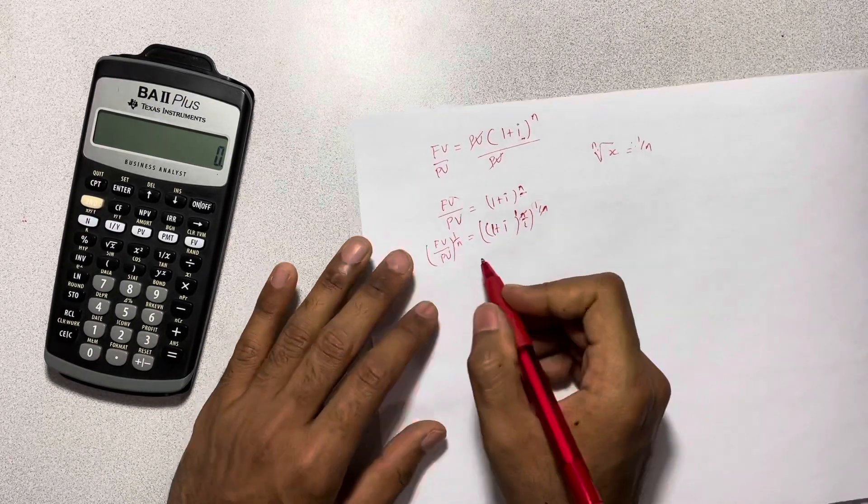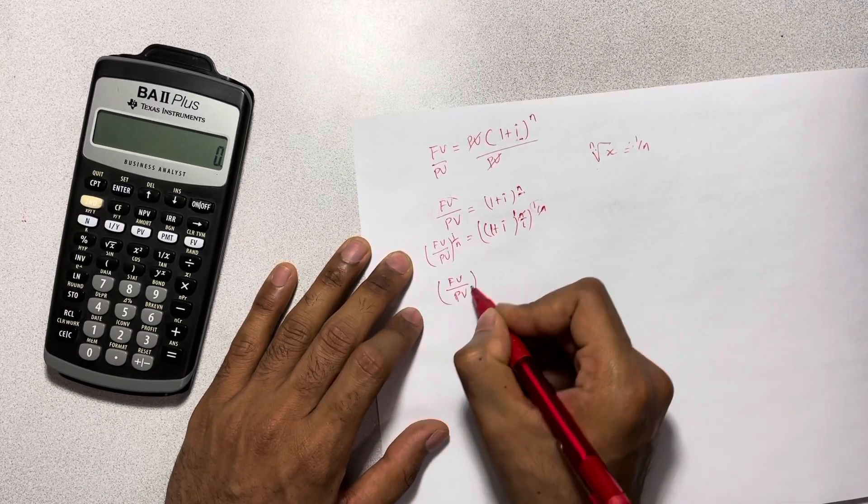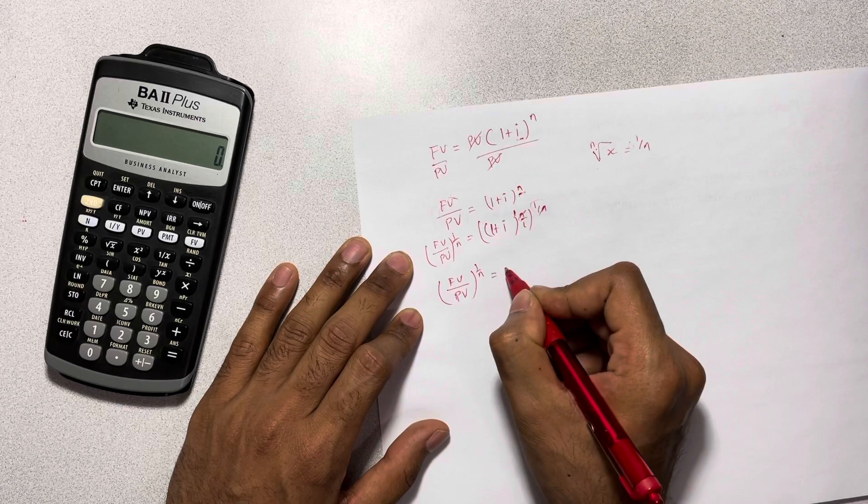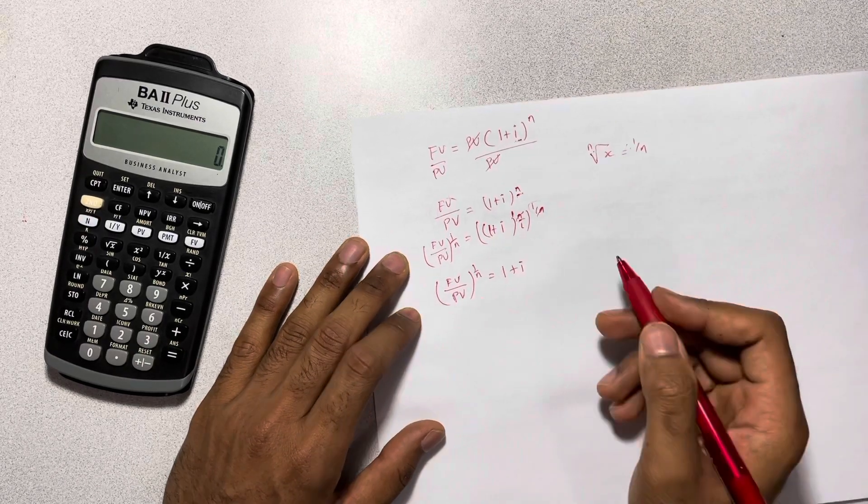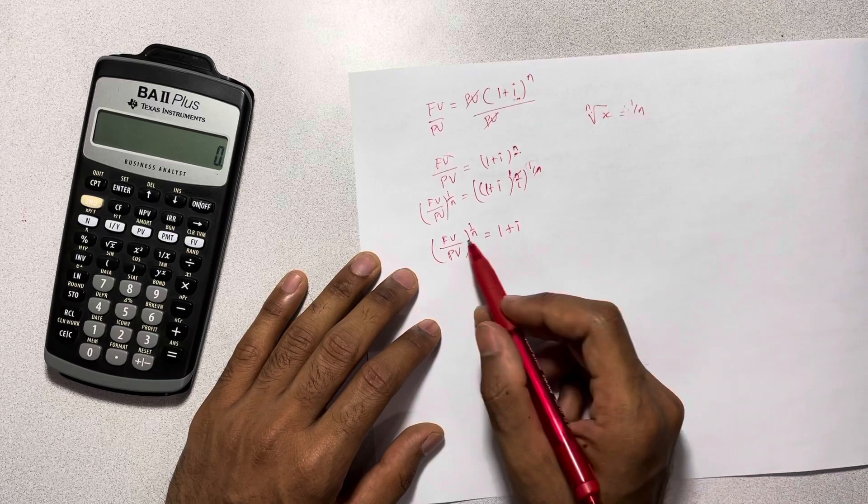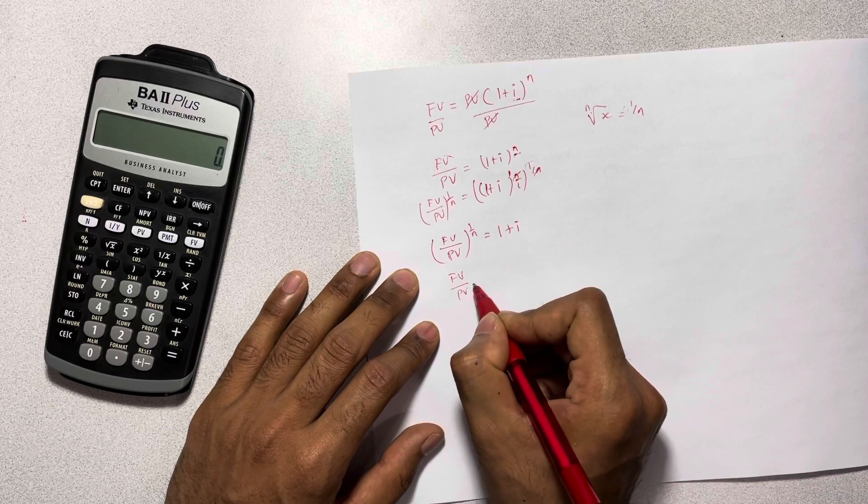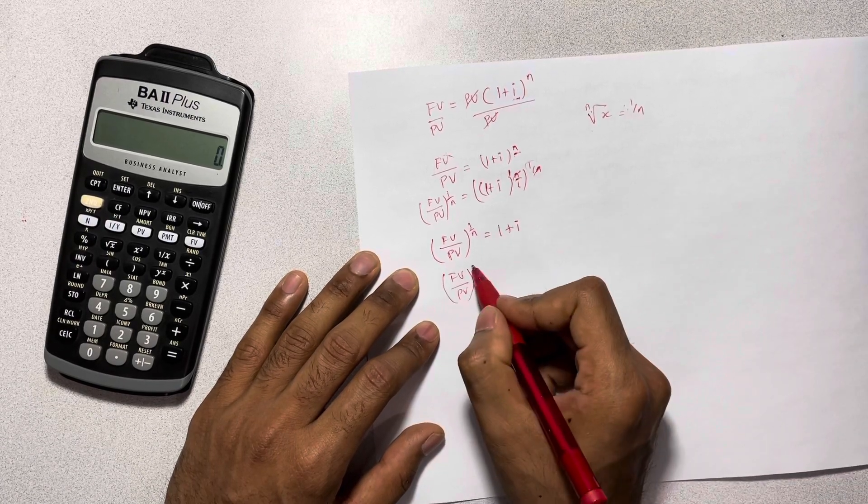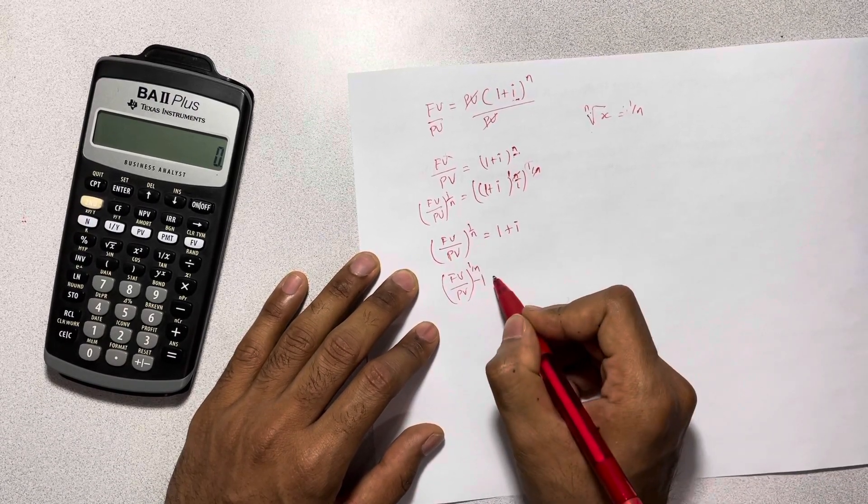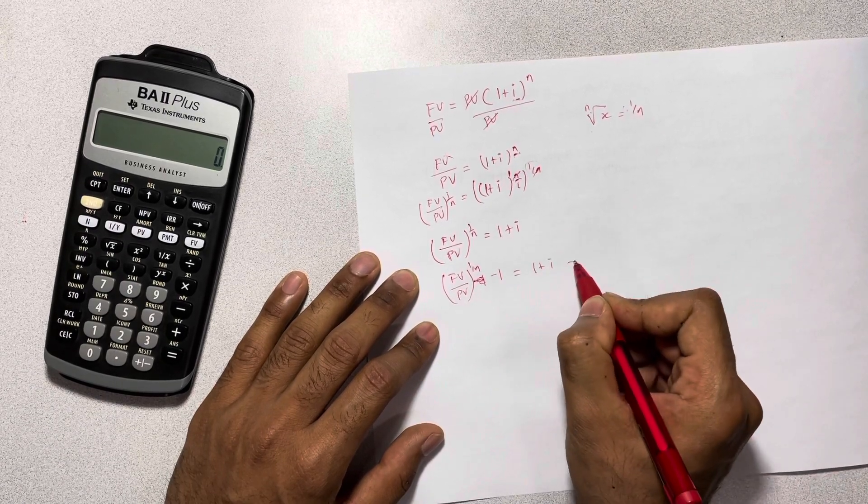Now it's very easy. So future value divided by present value to the power of 1 over n is equal to 1 plus i. Now the only thing we have to do in order to isolate i is just subtract by 1 on each side. So it's future value over present value to the power of 1 over n minus 1 is equal to 1 plus i minus 1.